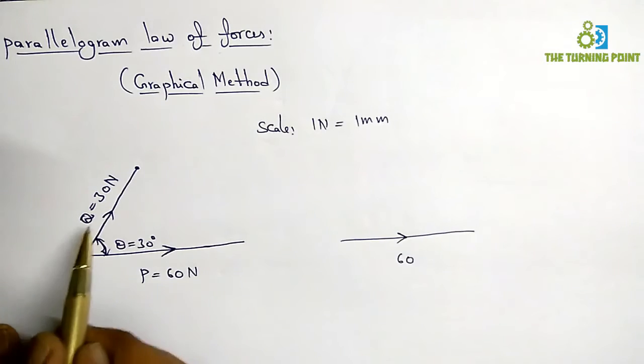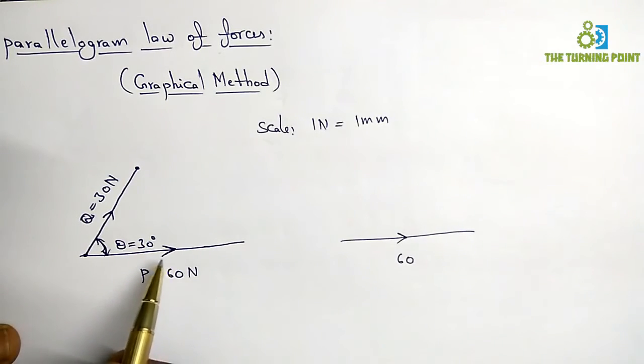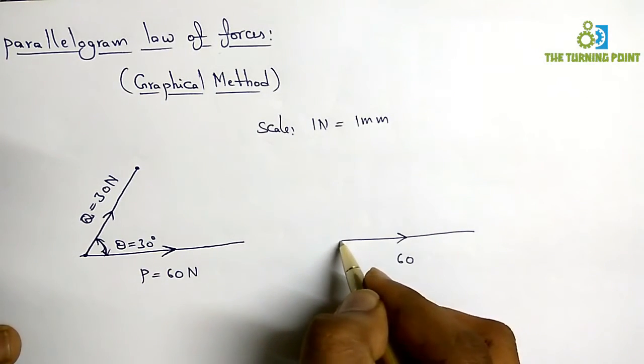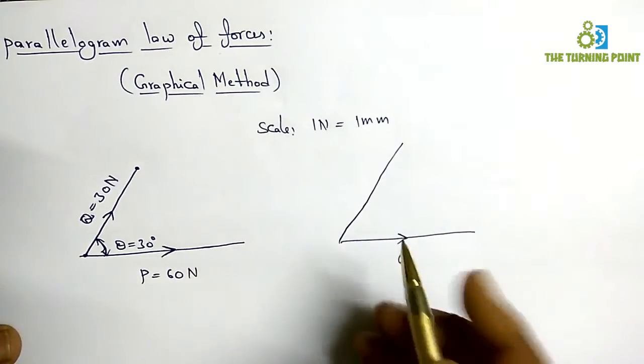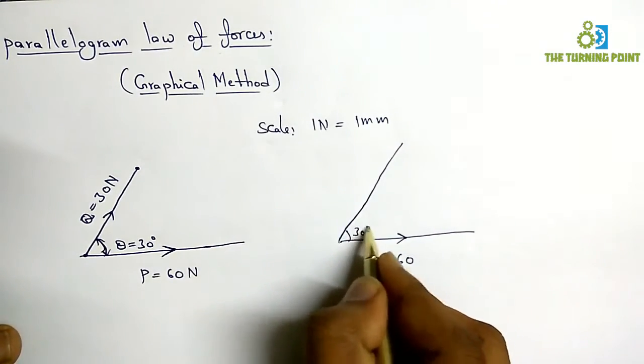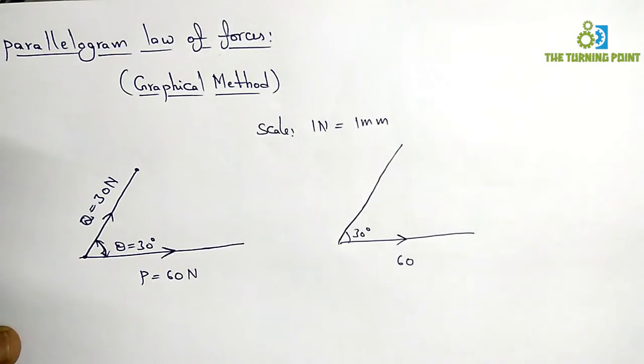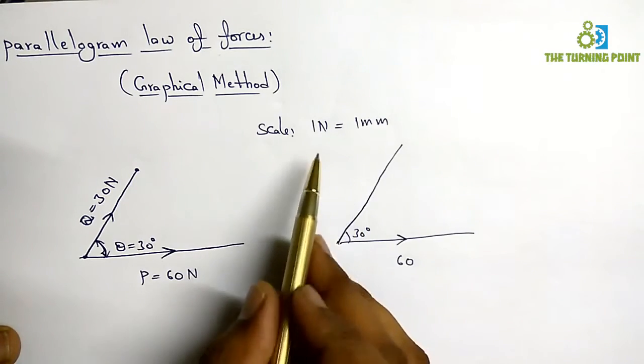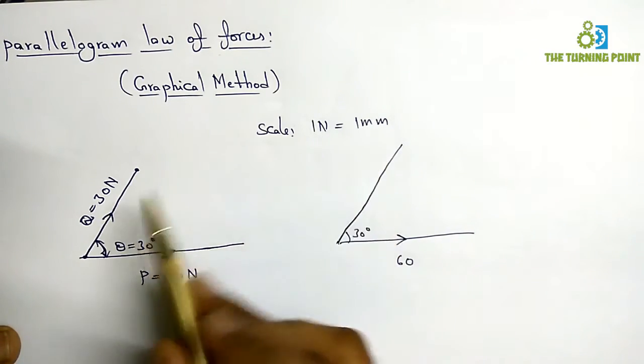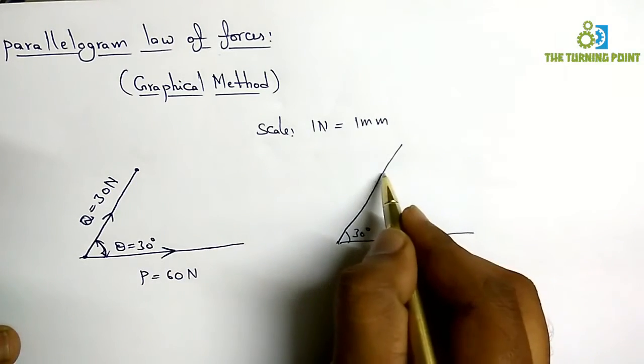Now I have to consider the second force at an inclination of 30 degrees. Draw a line which is at 30 degrees inclination. Consider the force at a distance of 30 mm, because 1 newton equals 1 mm, so 30 newtons will equal 30 mm.